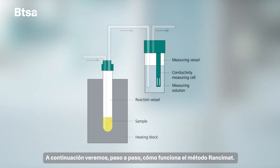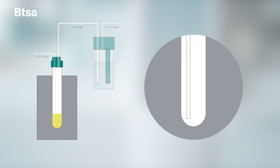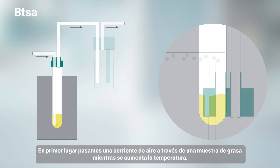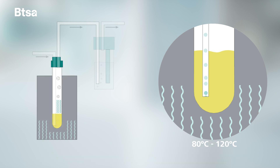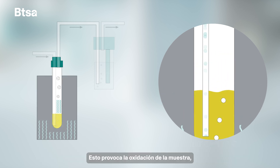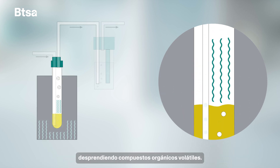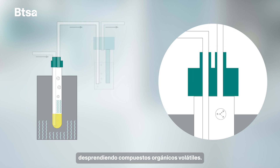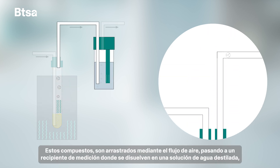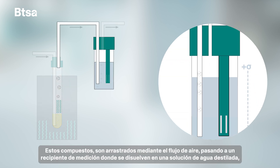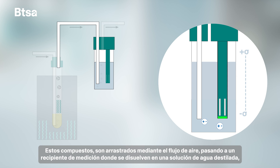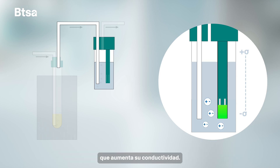Now we will see, step by step, how the Ransomat method works. First, we pass a constant airflow through a sample of fat while the temperature is increased. This causes the oxidation of the sample, releasing volatile organic compounds. These compounds are dragged by the airflow, passing to a measuring vessel where they dissolve in a solution of distilled water, which increases its conductivity.